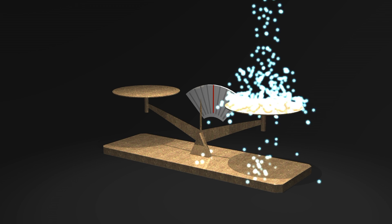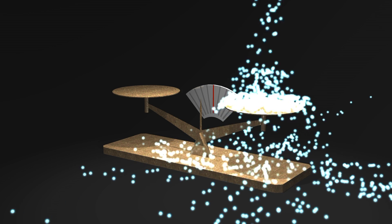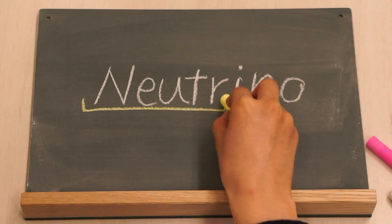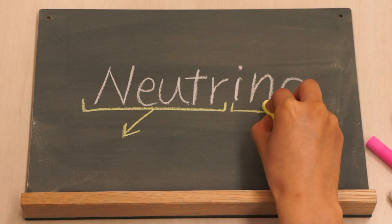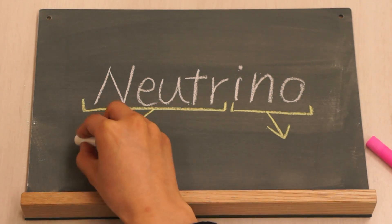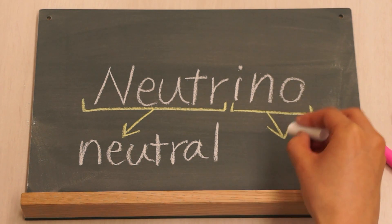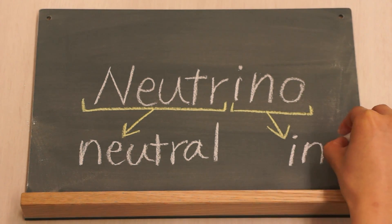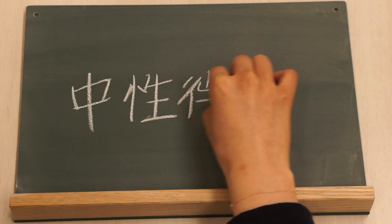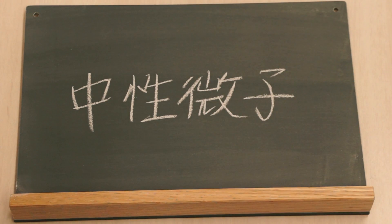Neutrinos are the only fundamental matter particles we know of which do not have an electrical charge. Their name comes from the word neutral, which means no electrical charge, and the Italian suffix ino, which means little one. So neutrino means tiny electrically neutral particle.